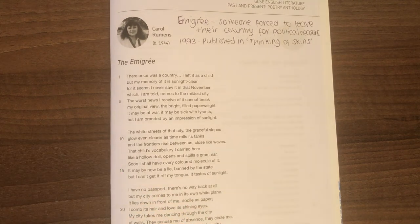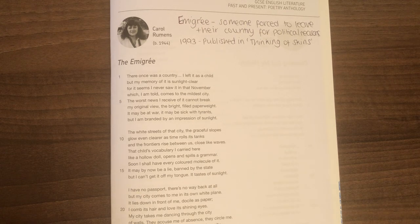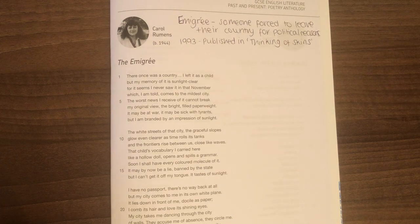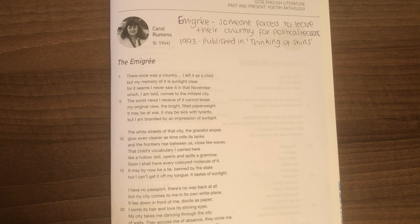There once was a country, I left it as a child, but my memory of it is sunlight clear, for it seems I never saw it in that November which I am told comes to the mildest city. The worst news I receive of it cannot break my original view, the bright filled paperweight. It may be at war, it may be sick with tyrants, but I am branded by an impression of sunlight. The white streets of that city, the graceful slopes glow even clearer as time rolls its tanks and the frontiers rise between us, close like waves. That child's vocabulary I carried here, like a hollow doll, opens and spills a grammar. Soon I shall have every coloured molecule of it. It may by now be a lie, banned by the state, but I can't get it off my tongue, it tastes of sunlight.